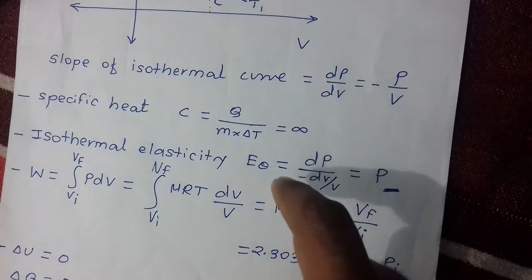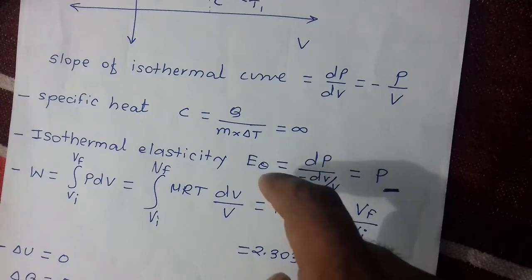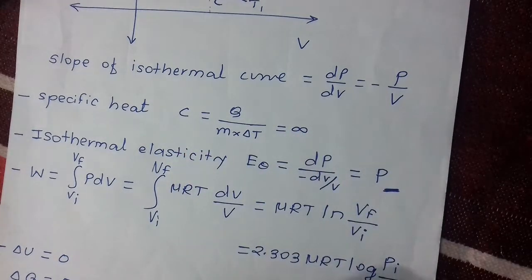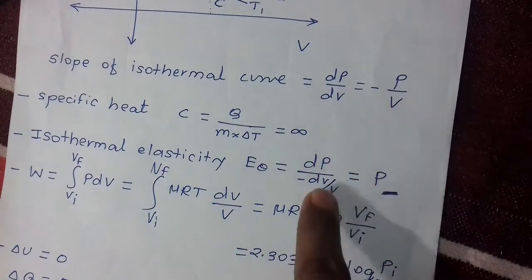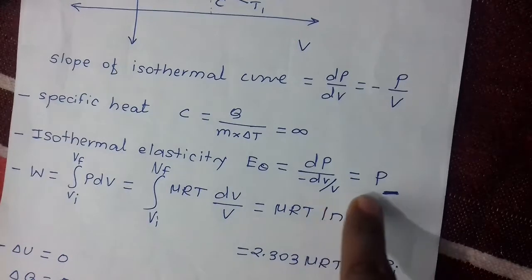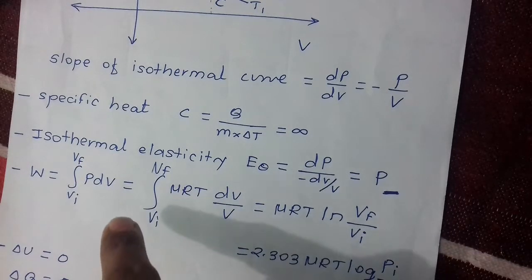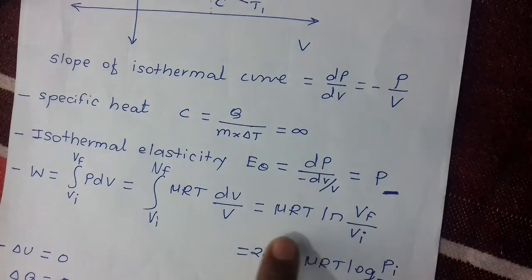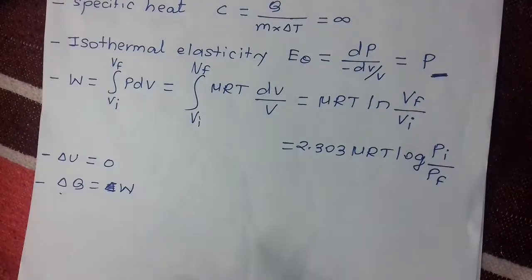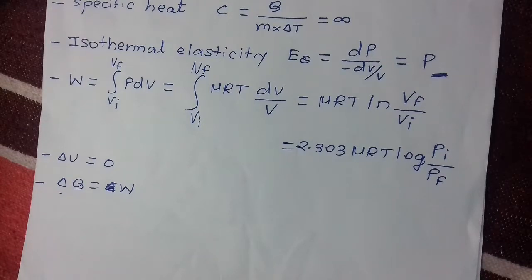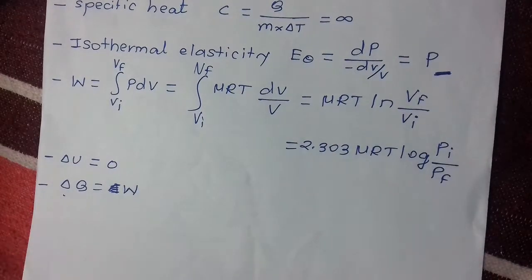Specific heat for an isothermal process is Q/(mΔT), but since ΔT = 0, specific heat becomes infinity. Isothermal bulk modulus (elasticity) = P. Work done = μRT ln(Vf/Vi). ΔU = 0 because there is no temperature change. Therefore ΔQ = W.